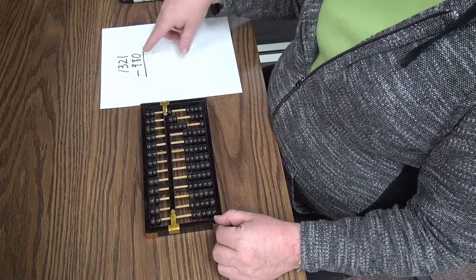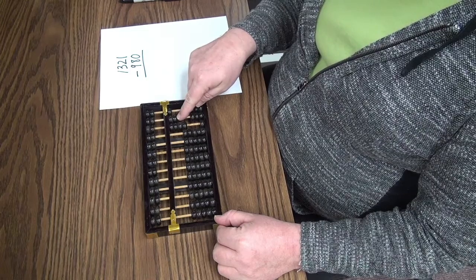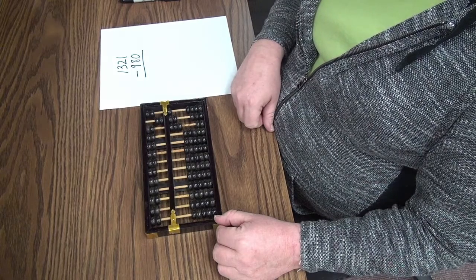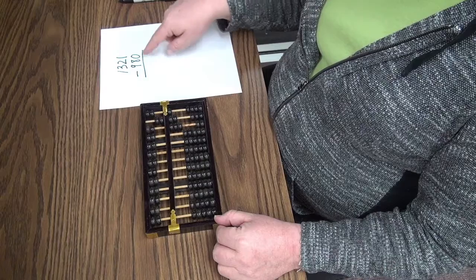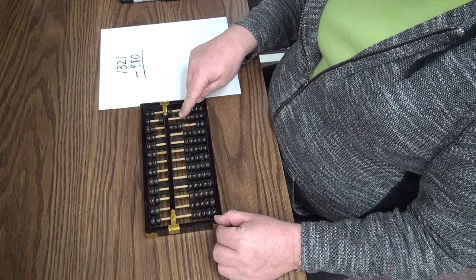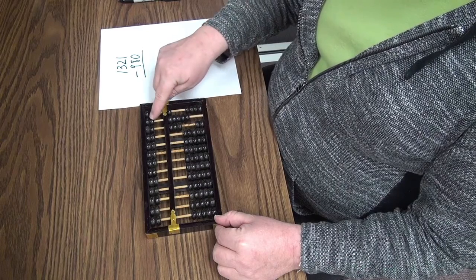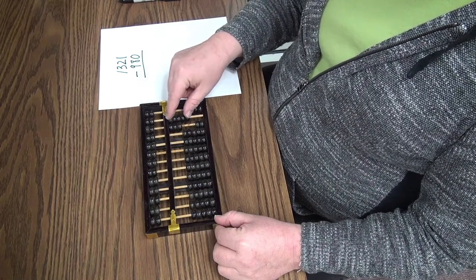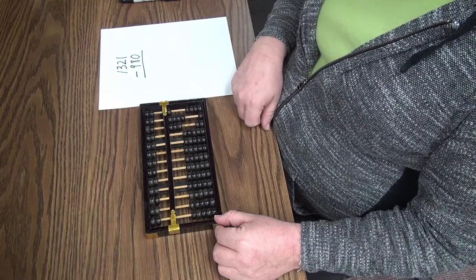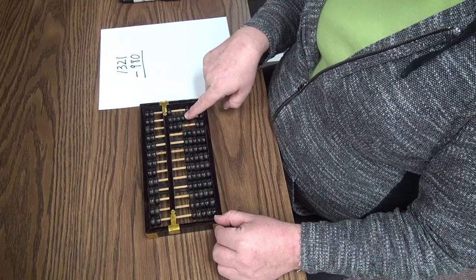Now I need to subtract 80. Subtracting 80, I can't subtract from 20. So I'm going to exchange a 100s bead for two 50s bead. Now I can subtract, begin to subtract, I should say, the 80. So subtract 50, 60, 70. I'm still 10 short, so I exchange the 5 bead in the tens column. So 50 for five tens down here. Subtract one more from that for 80. So my answer is 341.